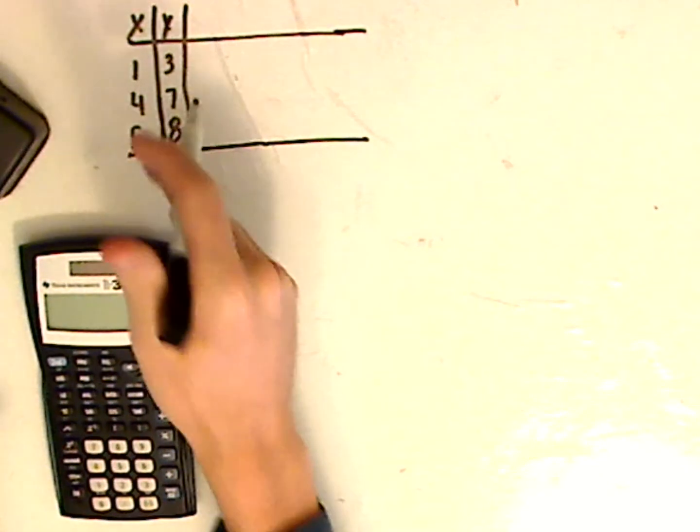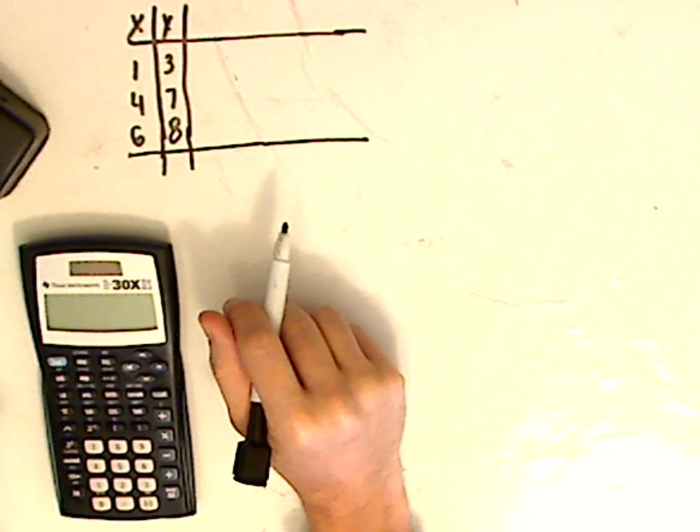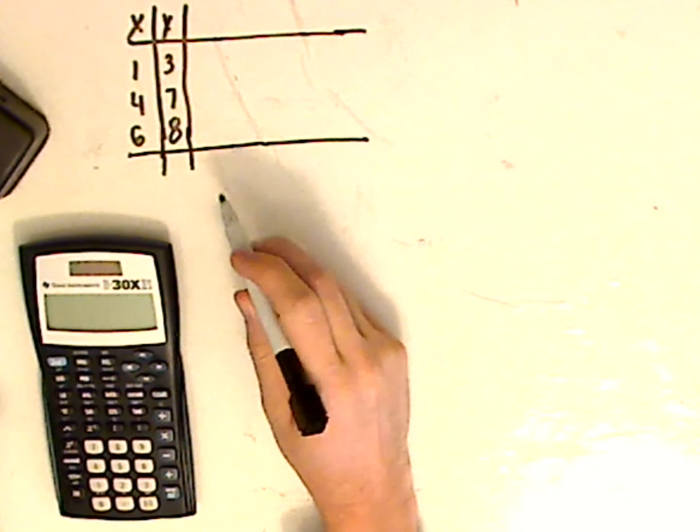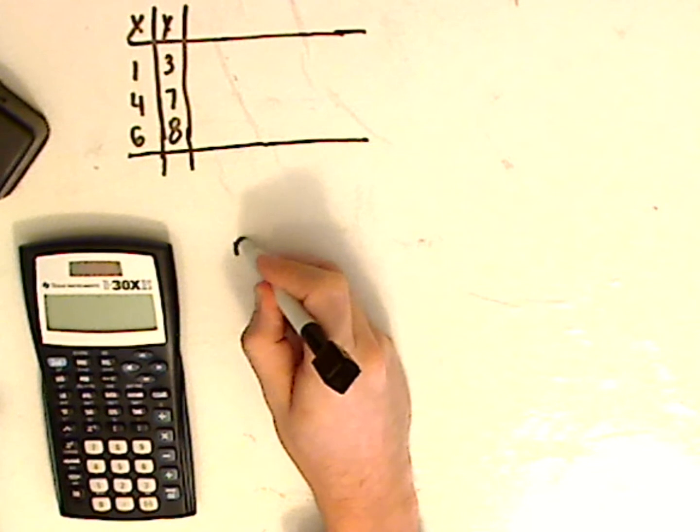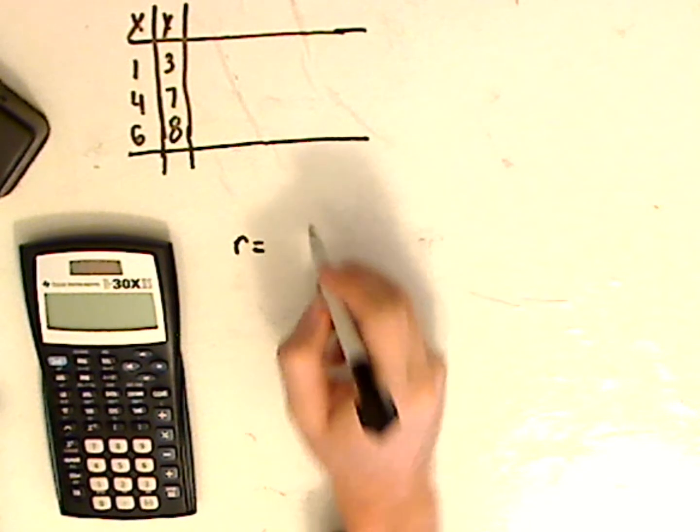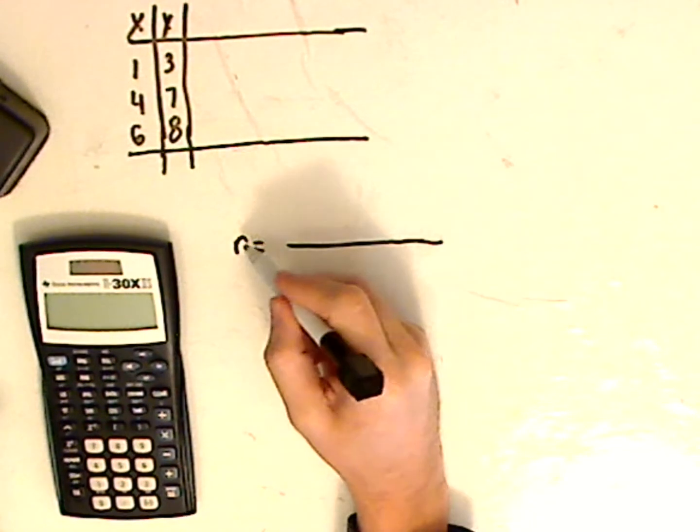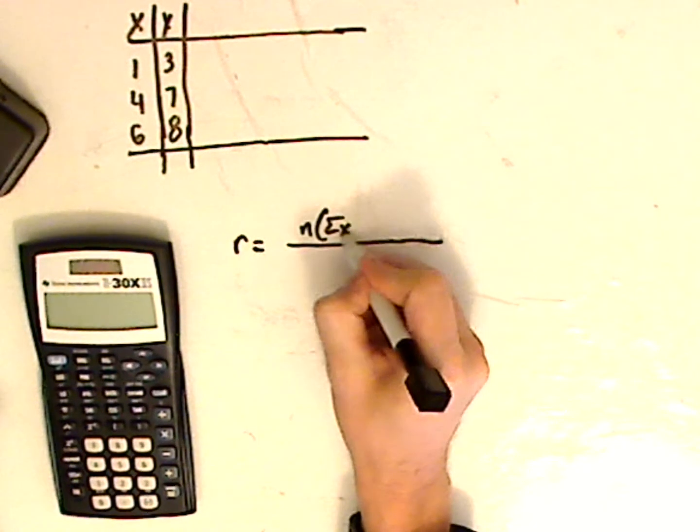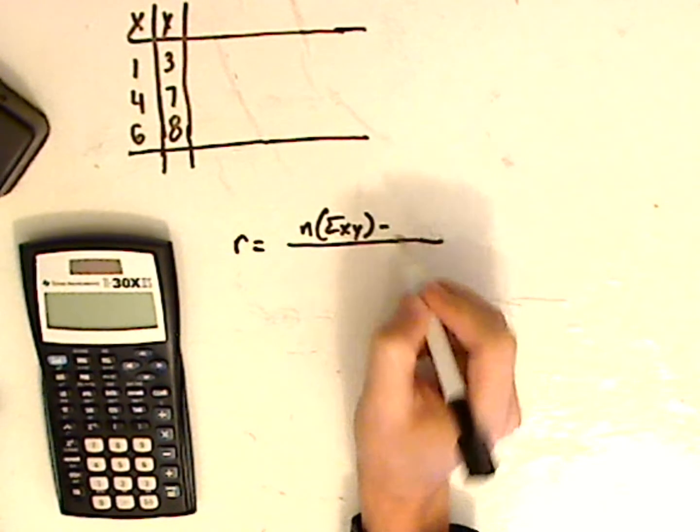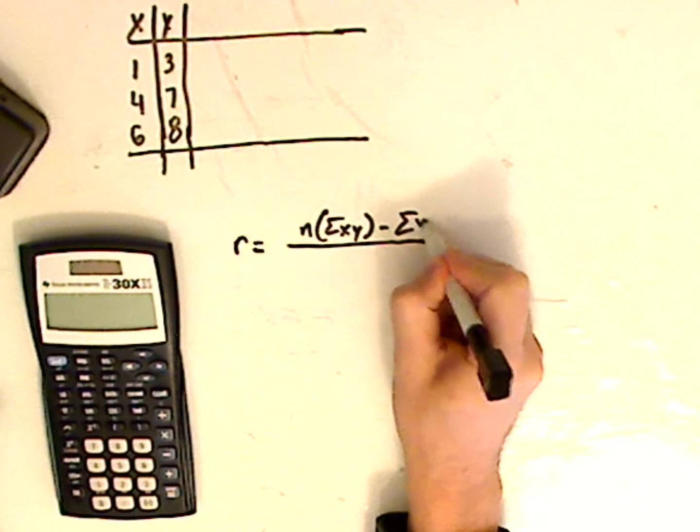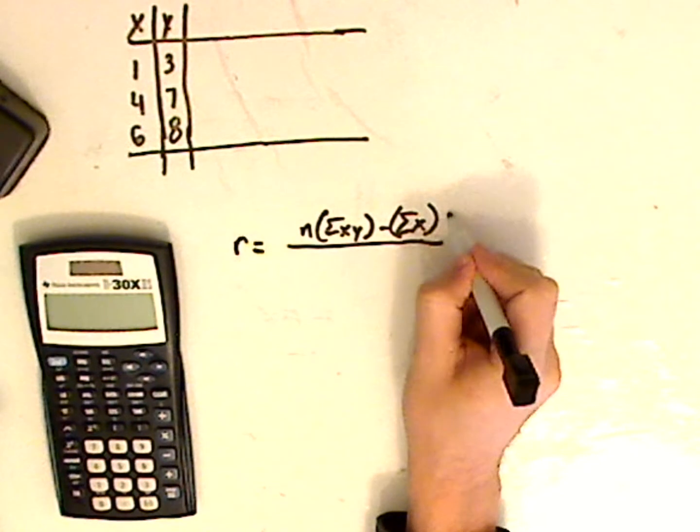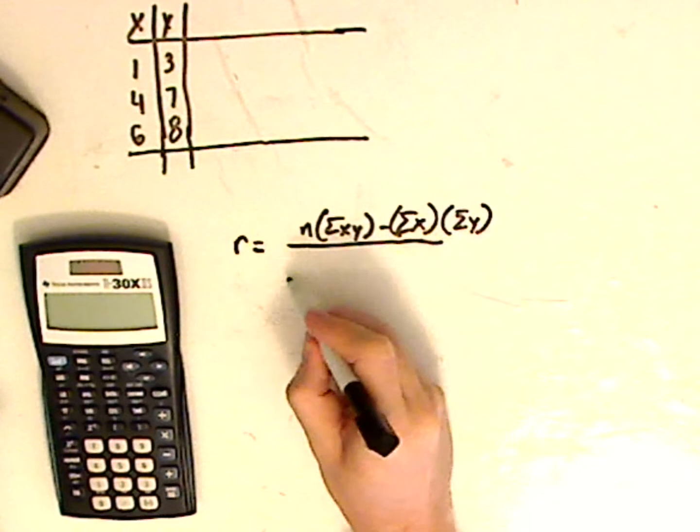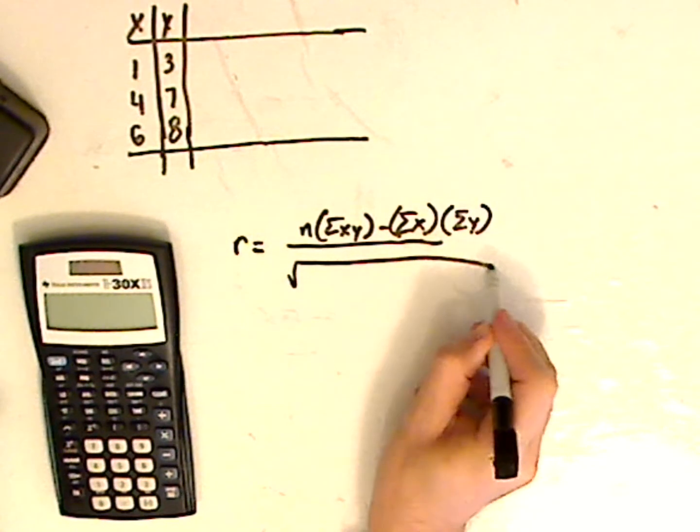So to find, I have three points and let me give you the formula first for the correlation coefficient and then from there we can set up our columns and use some substitution. You have r equals n parentheses the summation of x times y minus the summation of x parentheses and you're going to multiply that to the summation of y. Underneath you have a square root.